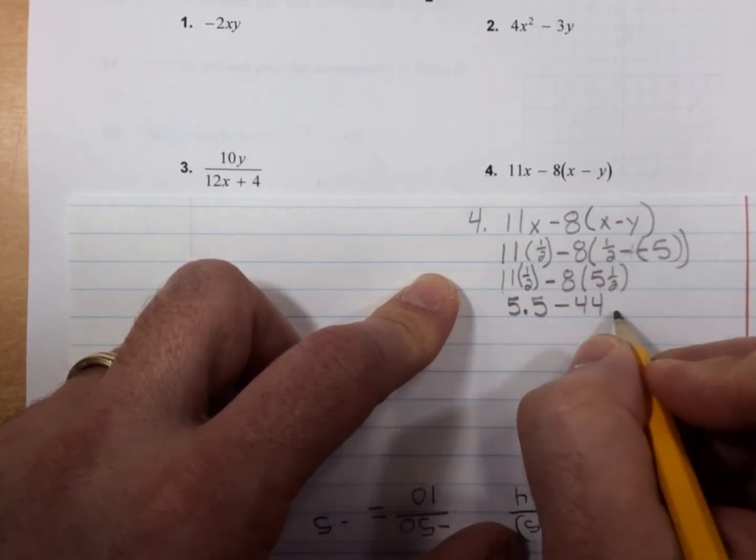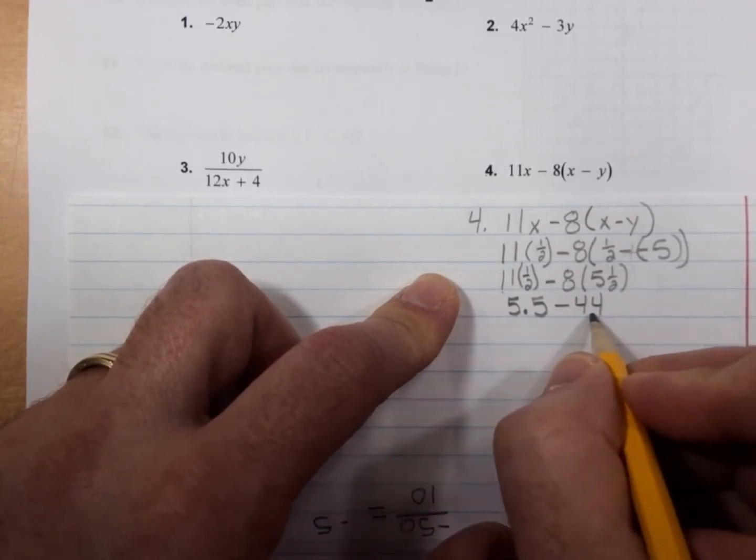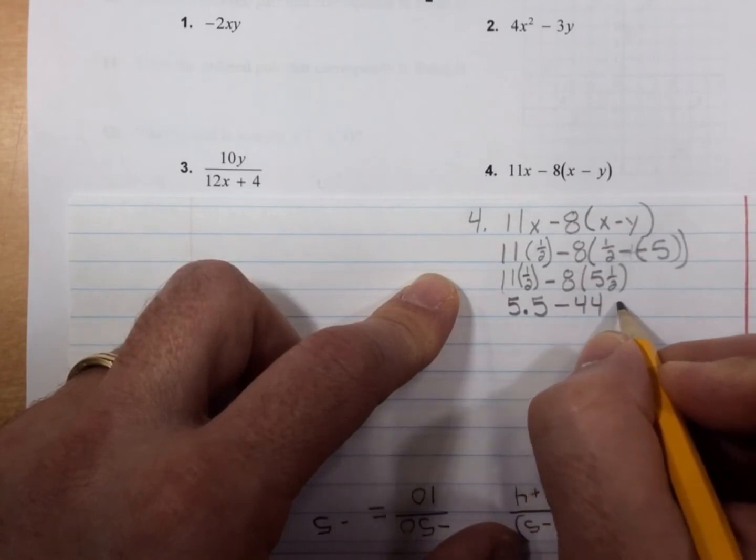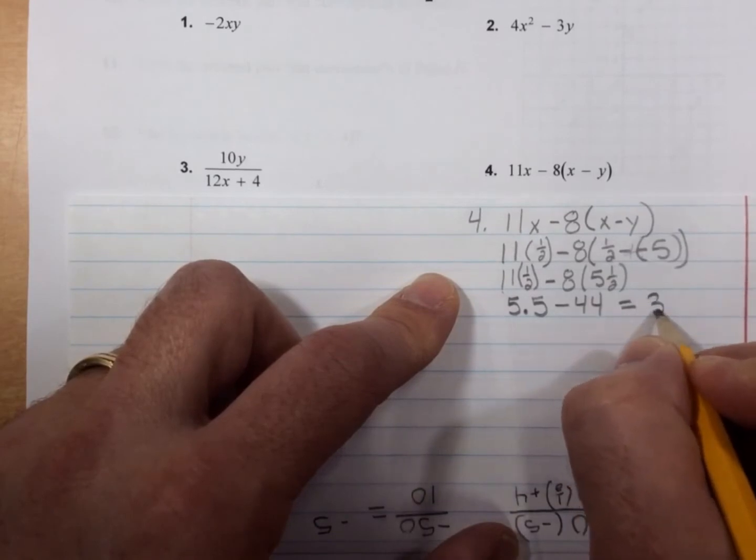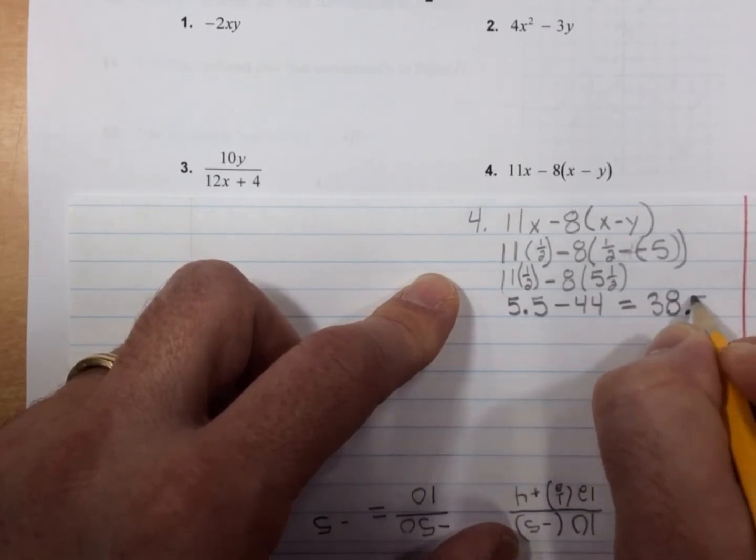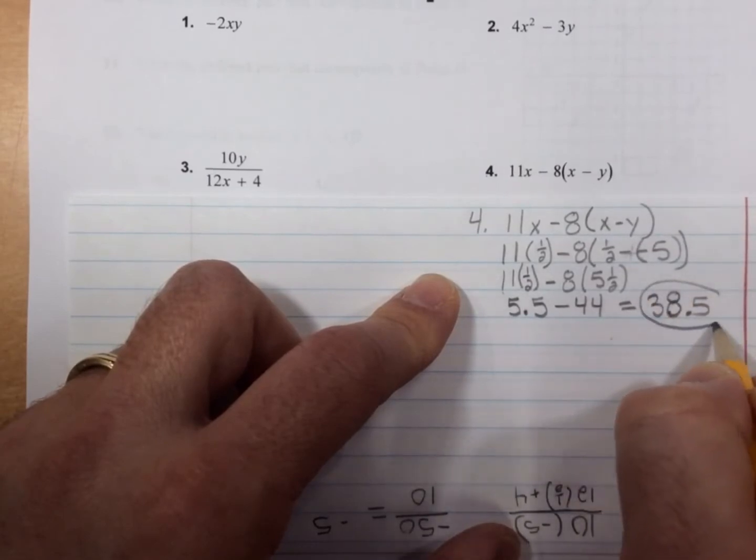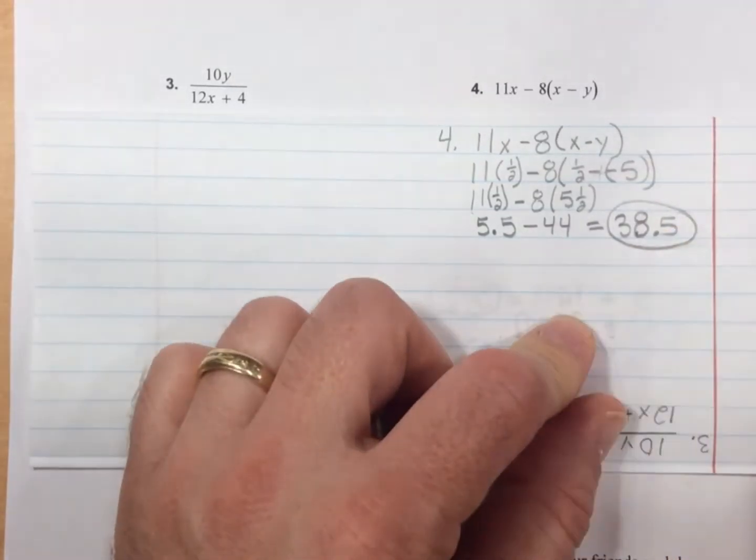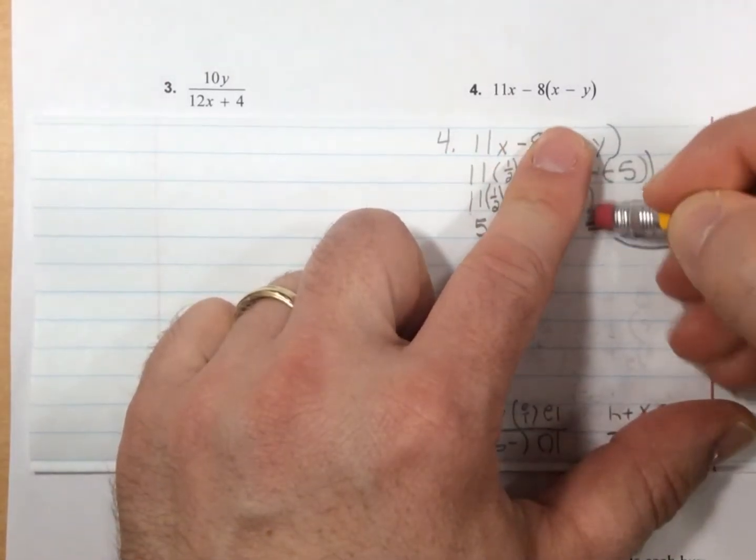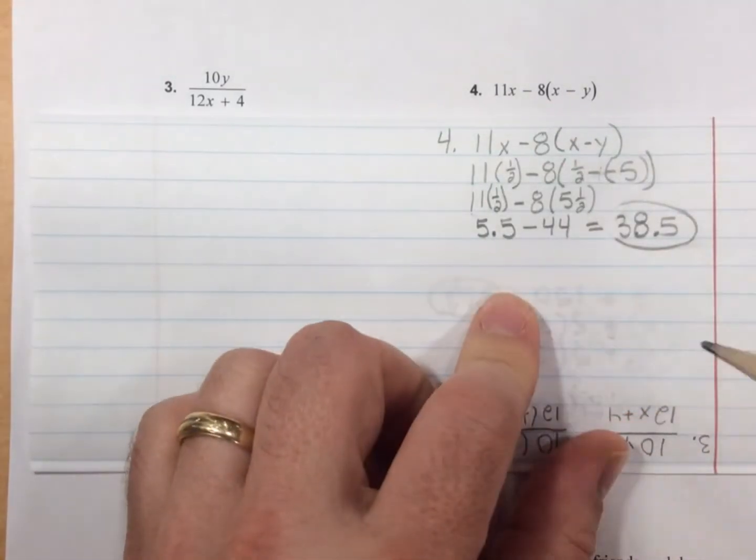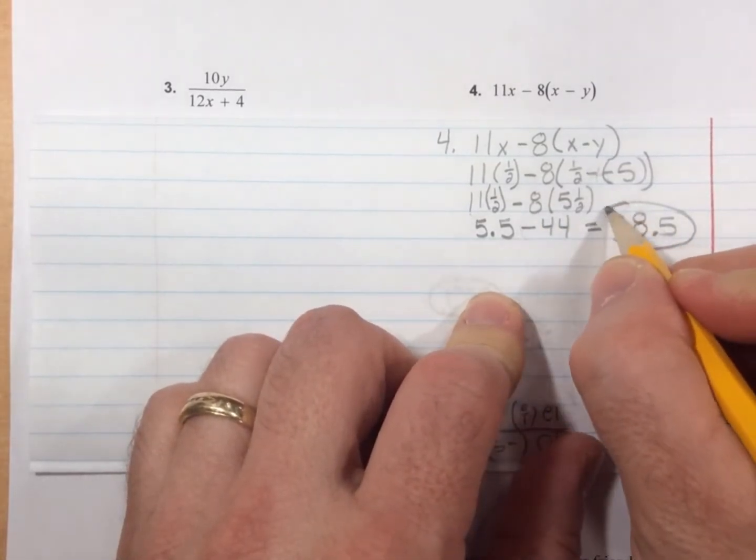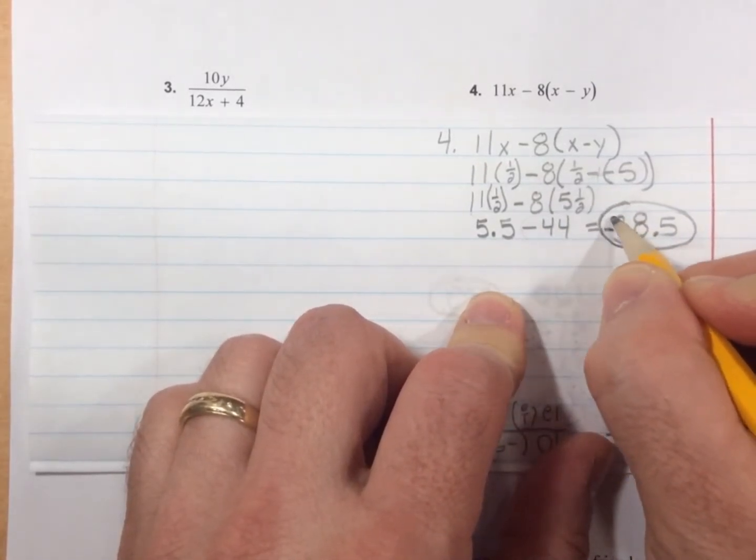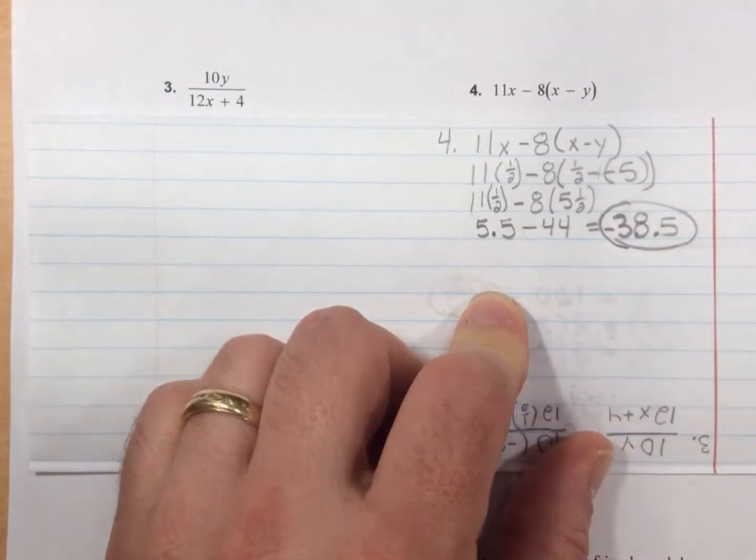Different signs here. So we'll subtract 5.5 from 44. And we get 38.5. Which, of course, would have to be a -38.5, because the negative had the larger absolute value when we put these together. Almost let that one slip. Excellent.